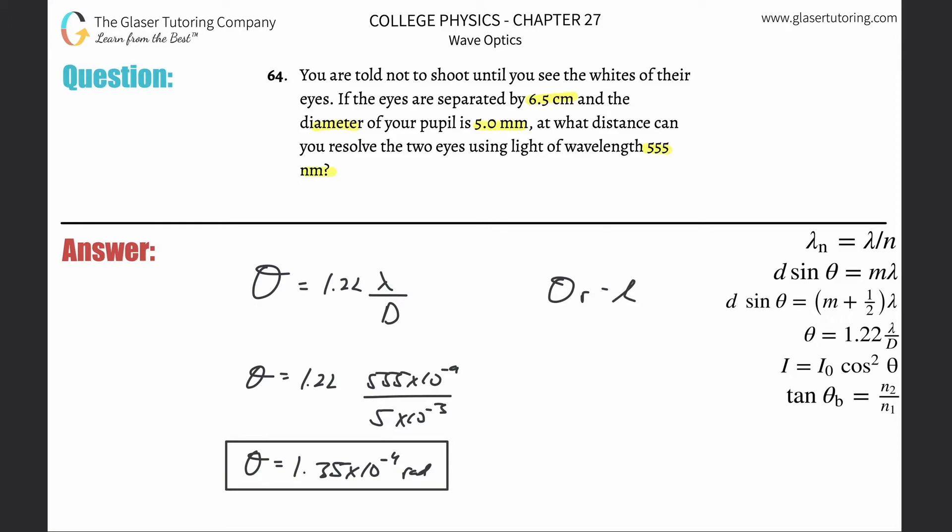This is the arc length formula: L equals the angle multiplied by the radius, meaning the distance between the eyes and this thing. Solving this for r, which is really what we want, we get that formula.